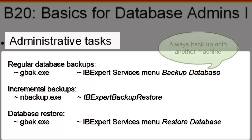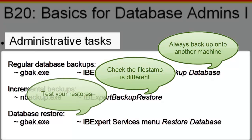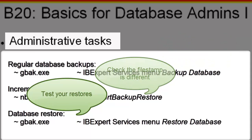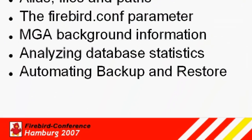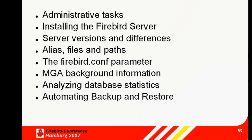Always backup onto another machine. Check that the file stamp is different and do a test restore regularly to confirm that all backup files are fine. It is possible to automate the database backup in a batch file in the Windows Scheduled Tasks. Although a great tool for automating your backups and restores is also the IBExpert Server tool, IBExpert Backup Restore. This enables you to automate backups and restores and can send you an email to inform you of any errors or confirm that there were no errors. We'll look at automating your backups and test restores in a later tutorial.